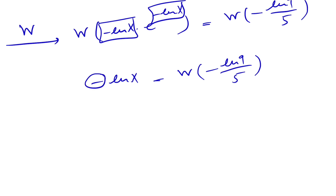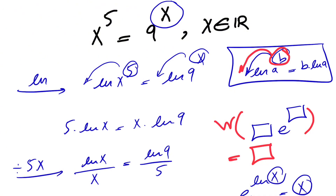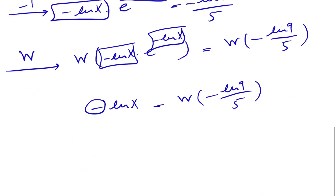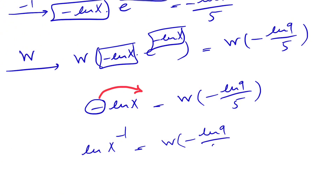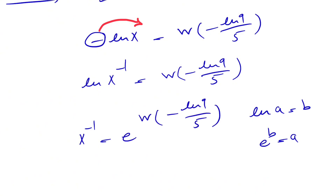Now we're going to reverse the logarithm law we used at the beginning. The exponent comes back up, giving us ln(x^(-1)) = W(-ln(9)/5). Since we have ln of something equal to a value, and the base of ln is e, we exponentiate both sides: x^(-1) = e^(W(-ln(9)/5)).